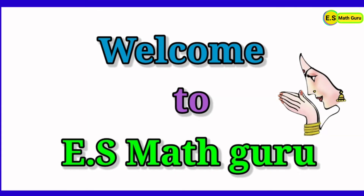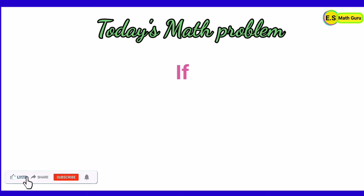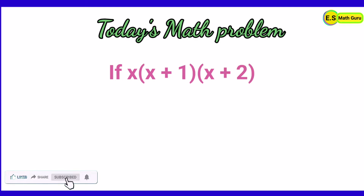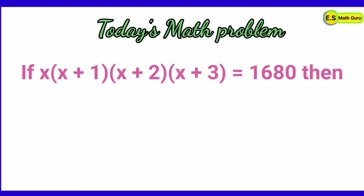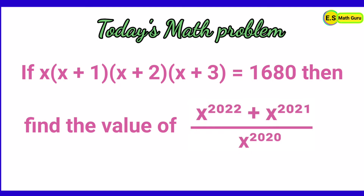Namaste to one and all. Today once again I have come up with one more interesting problem based on the current year, that is 2022. Let us see what the problem is and how to evaluate it. Today's math problem: if x(x+1)(x+2)(x+3) = 1680, then find the value of (x^2022 + x^2021) / x^2020.